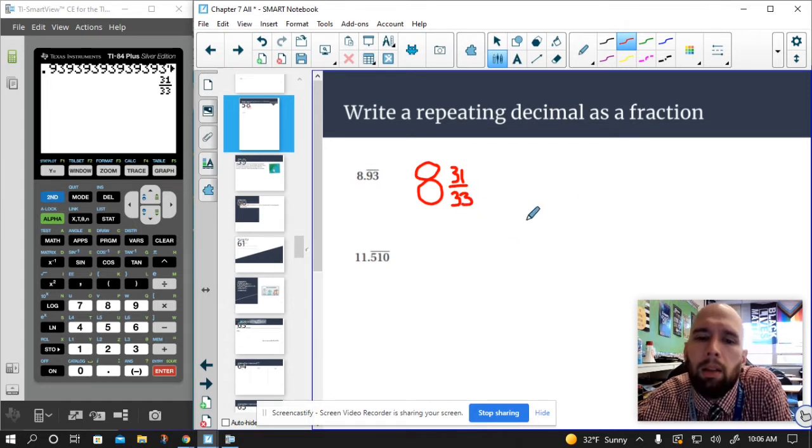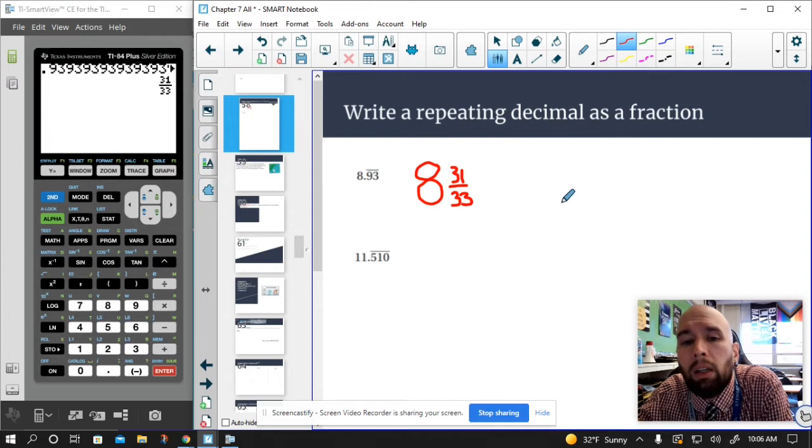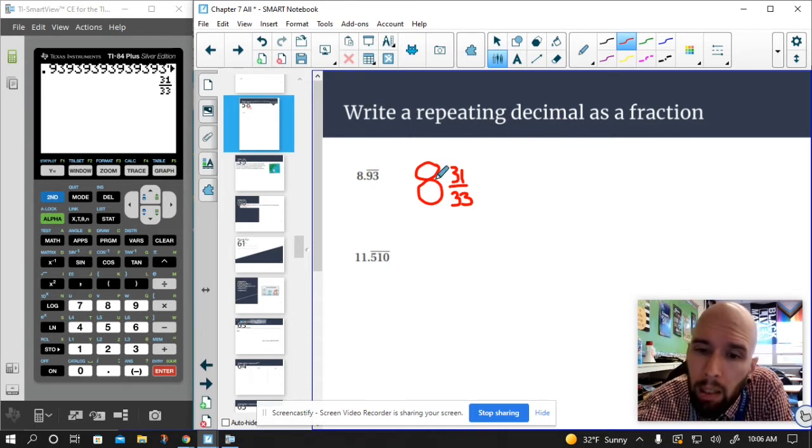Yeah, like that. Now the trick is you take those two digits and you put it over two nines, but in this case, it looks like we simplify here. So that simplifies right away.